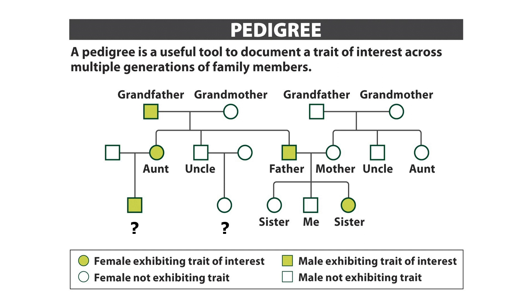One thing you'll be going through in the lab exercise is pedigrees. Pedigrees are basically like a family tree, but instead of just looking at names of parents and grandparents, it looks at a specific trait and how that trait is passed down from one generation to the next — or how it may skip a generation. There are some conventions always followed in a pedigree: circles always indicate females, and squares indicate males. If it's darkened in, that means they are showing the trait you're looking at. If it's white and not darkened in, they are not showing that trait.